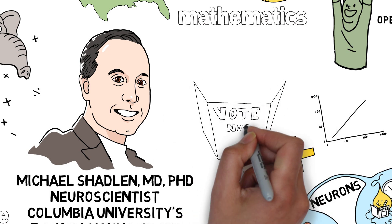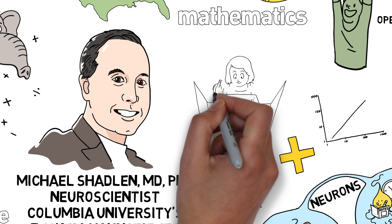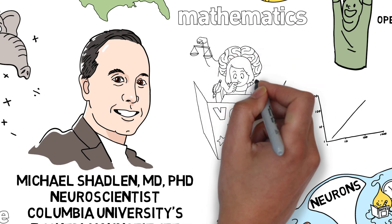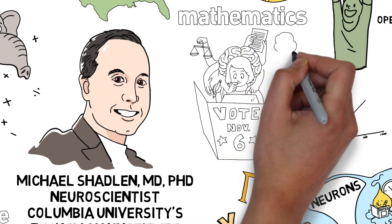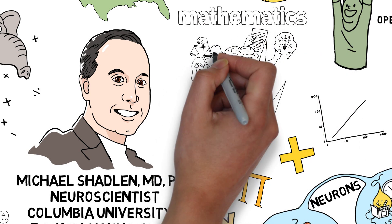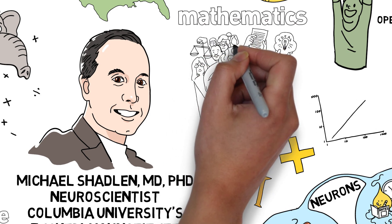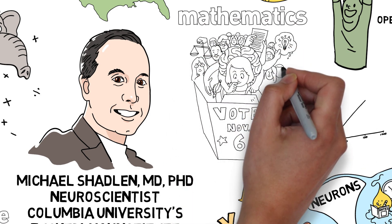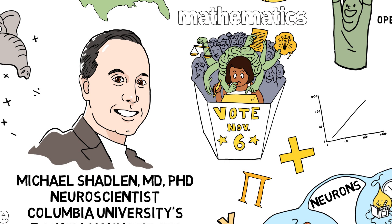So when you vote, you are weighing evidence for and against candidate A or candidate B. Your brain is grasping ideas, and the organization of that in the brain, what gives rise to it, is really very similar to grasping objects.